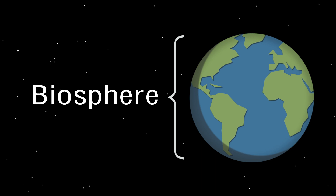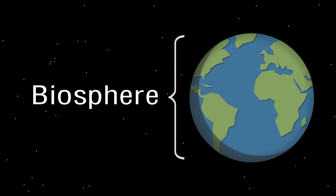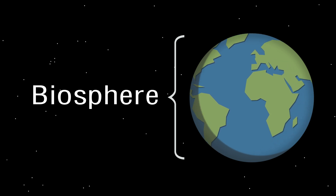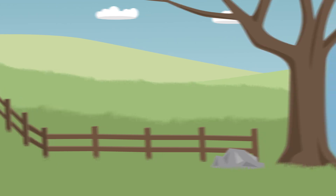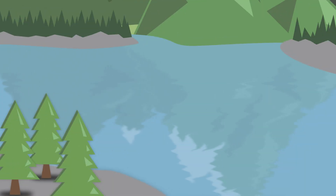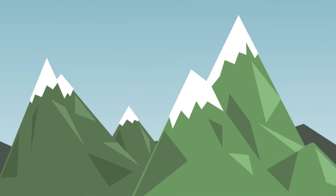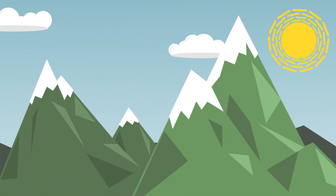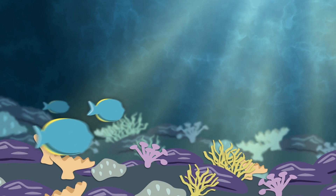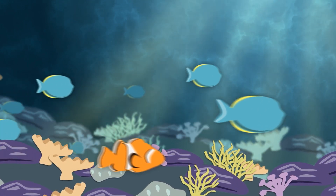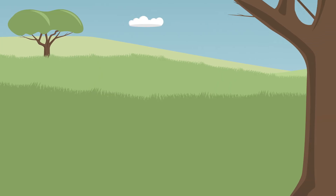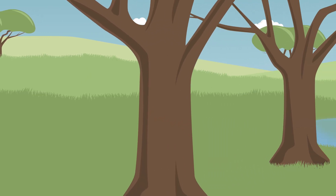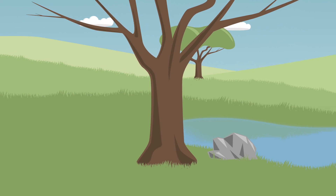The planet Earth is considered a biosphere of life. The term biosphere means all life on Earth and all places where life exists, including most regions of land, bodies of water, the atmosphere to an altitude of several kilometers, and even sediments far below the ocean floor. In the next part of this journey, we will look at ecosystems.